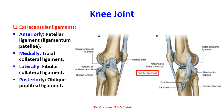What about the ligaments? We have extracapsular ligaments and intracapsular ligaments. The extracapsular ligaments include the ligamentum patellae anteriorly, the tibial collateral ligament medially, the fibular collateral ligament laterally, and the oblique popliteal ligament posteriorly.